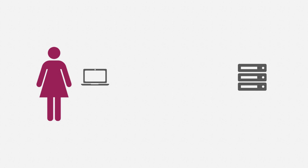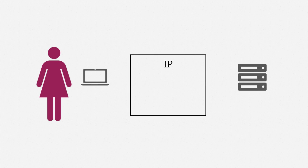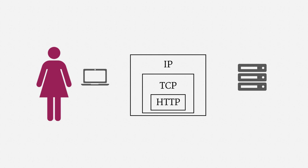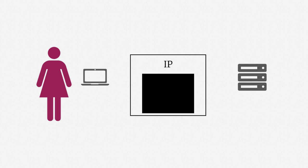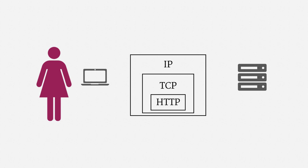Another way of visualizing the layers is as a set of wrappers, like layers of an onion. The outermost layer, IP, moves data between Alice's laptop and the web server. Nestled in the IP traffic is TCP traffic, and nestled in that is the HTTP traffic. Historically, the idea was that when data moved over the internet, intermediaries would only look at the IP layer — they wouldn't look at what was stored inside; it was just a black box. More recently, internet intermediaries have been peering inside IP traffic. That's called deep packet inspection, and it's a quite controversial practice.